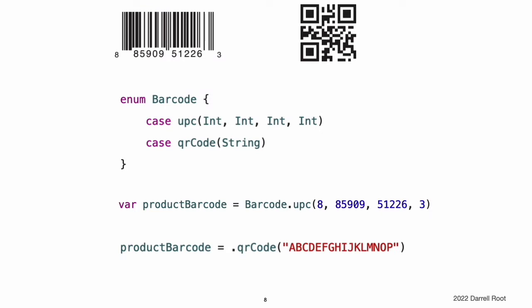Associated Values. The examples in the previous section show how the cases of an enumeration are a defined, typed value in their own right. You can set a constant or variable to planet.earth and check for this value later. However, it is sometimes useful to be able to store values of other types alongside these case values. This additional information is called an associated value, and it varies each time you use that case as a value in your code. You can define Swift enumerations to store associated values of any given type, and the value types can be different for each case of the enumeration if needed. Enumerations similar to these are known as discriminated unions, tagged unions, or variants in other programming languages.